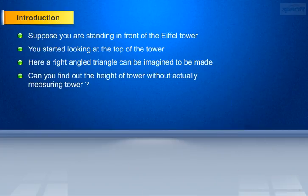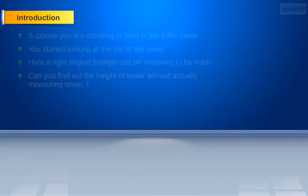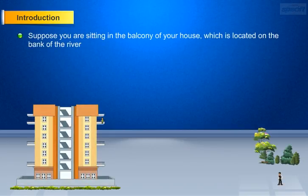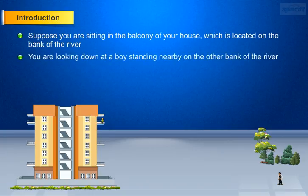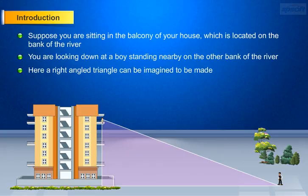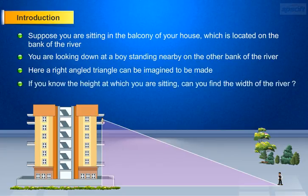Let us consider another scenario. Suppose you are sitting in the balcony of your house, which is located on the bank of a river. You are looking down at a boy standing nearby on the other bank of the river. Here, a right angle triangle can be imagined to be made. If you know the height at which you are sitting, can you find the width of the river?